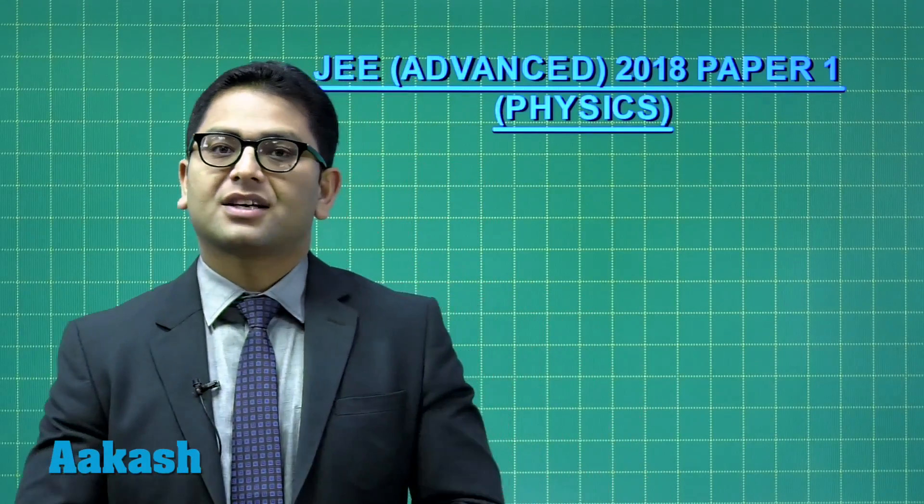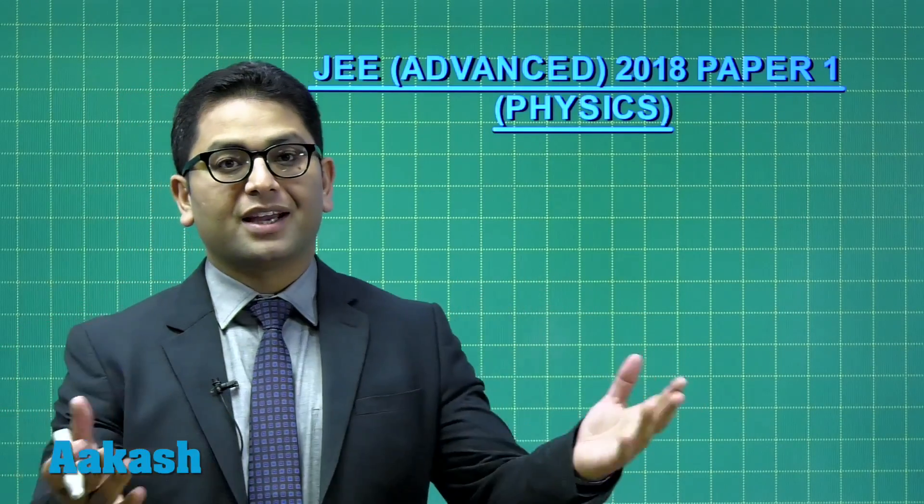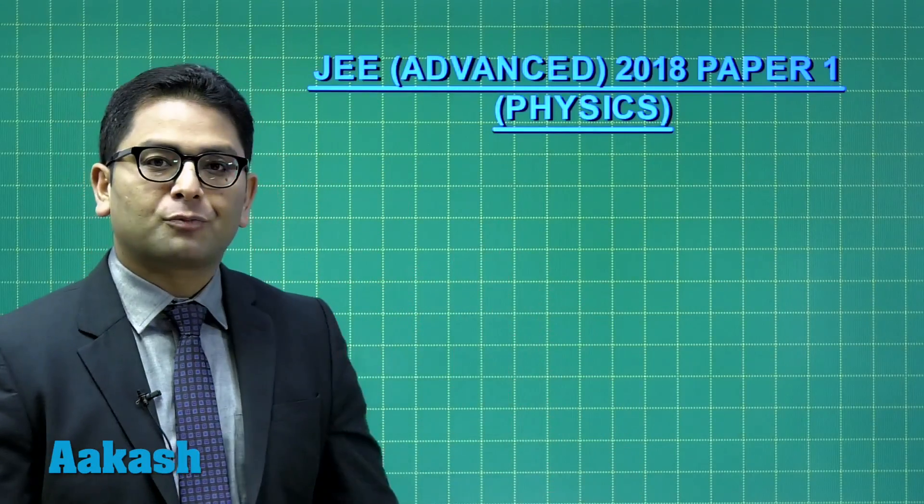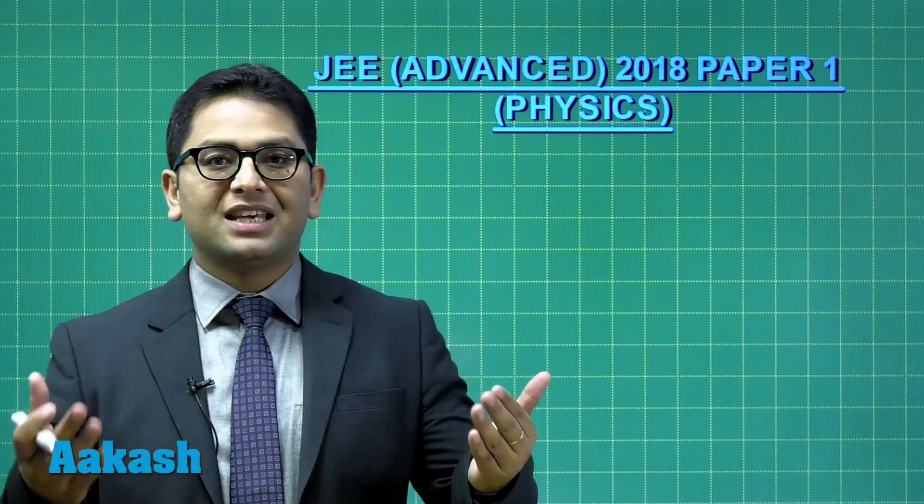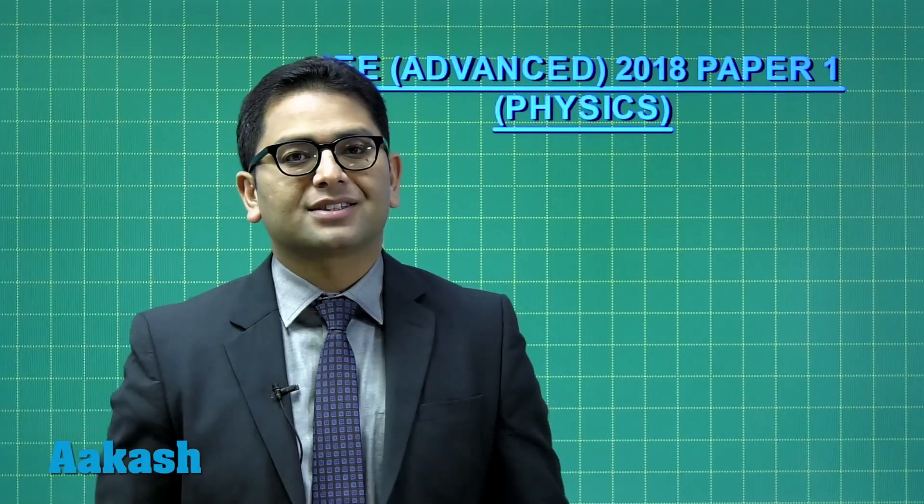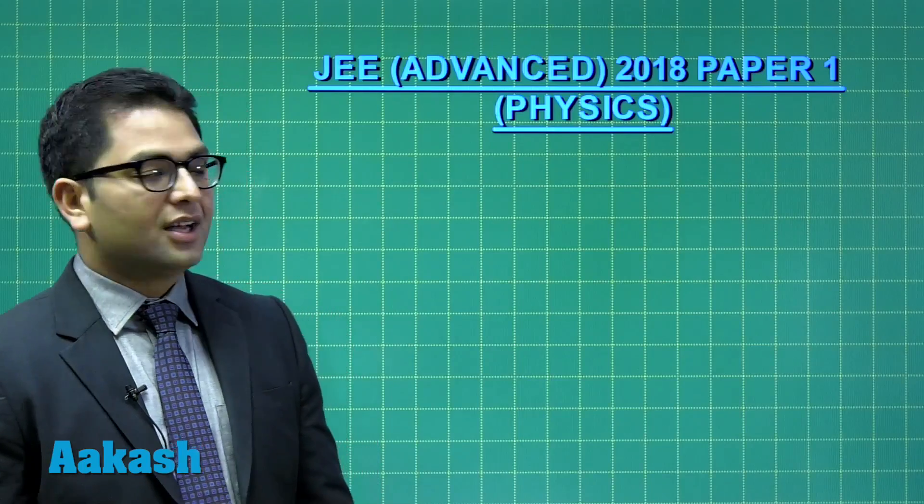And two days after the main examination, JEE Council has released the question paper on the web. And on the basis of that, we are here to present the solution. So I'll be taking physics, and right here we'll be talking about paper one. In section one of paper one, you have six questions where there are more than one option correct. Like the previous year, this time also JEE Advanced has maintained a partial marking scheme. But I will not be going into the nitty gritties of partial marking scheme, we'll be directly focusing on the solution part.